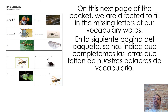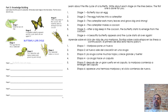On this next page of the packet, we are directed to fill in the missing letters of our vocabulary words. Learn about the life cycle of a butterfly. Write about each stage on the lines below. The first one is done for you.